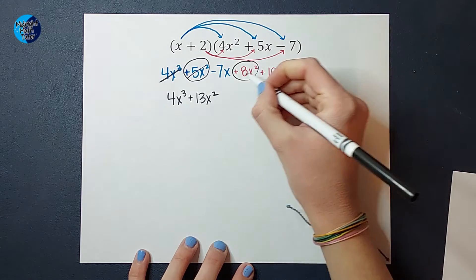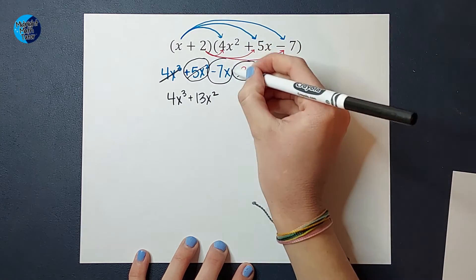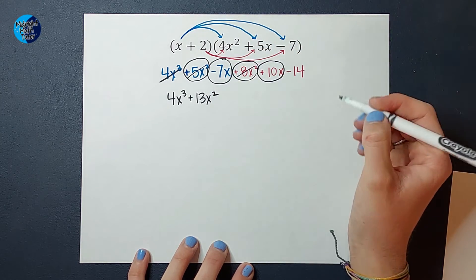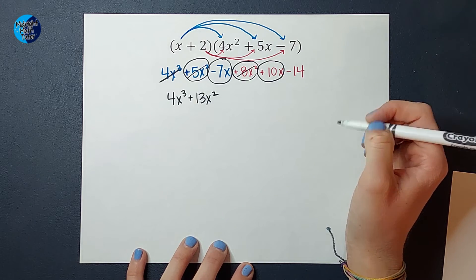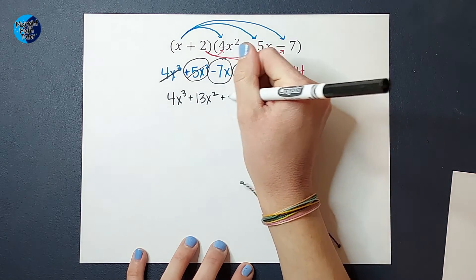Next I have 2 that have x's. Those are like terms. So negative 7x plus 10x is going to give me positive 3x.